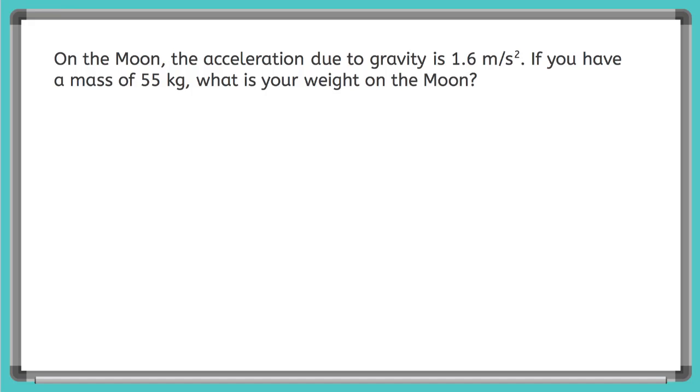Now what do we notice first off? It looks like our mass is the same, so the amount of matter that we have never changes. It's the same on Earth, on the moon, on Jupiter, anywhere in space. But what do we notice about little g on the moon? Little g looks way smaller on the moon than on Earth.